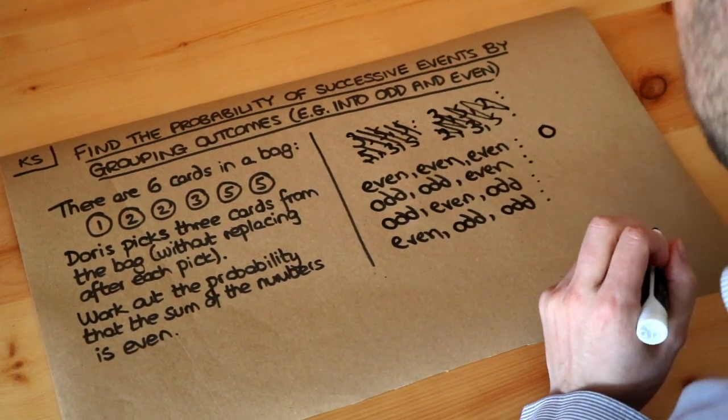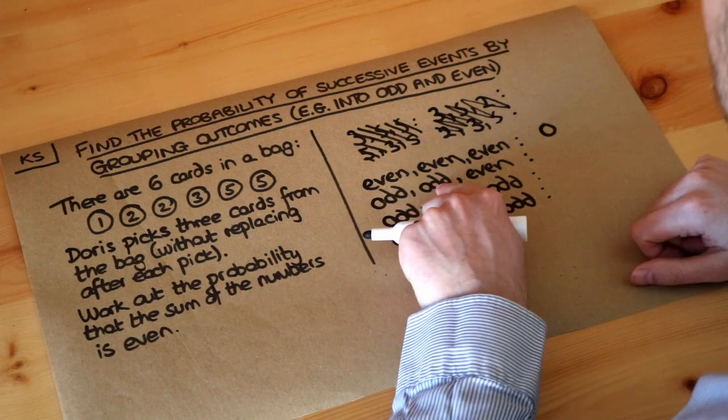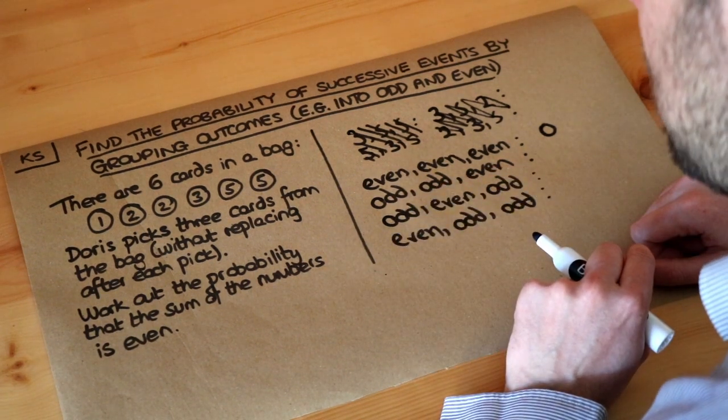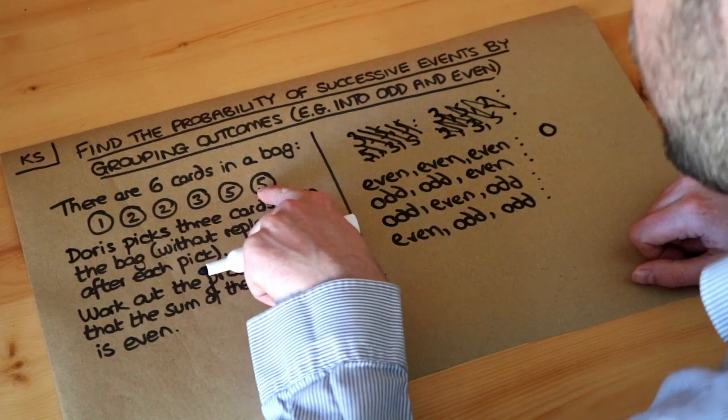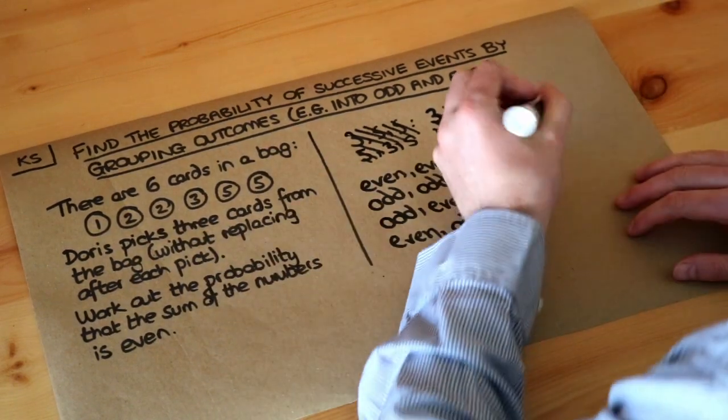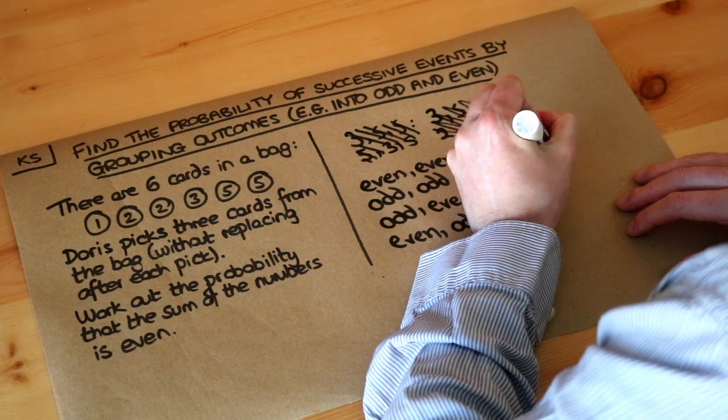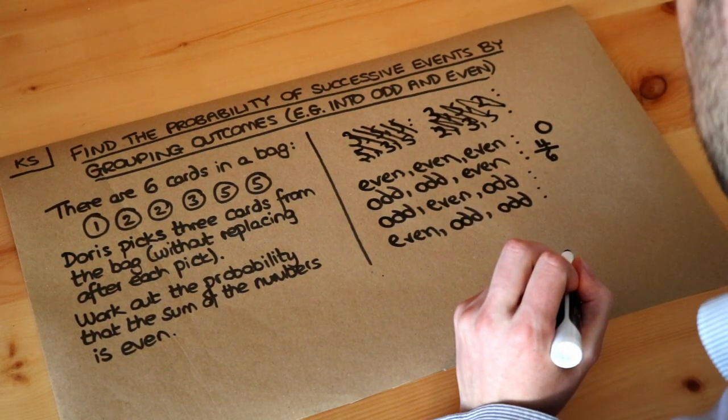So it has a probability of zero. What about the next one? Odd, then odd, then even. Well, the probability of the first card being odd is one, two, three, four. There's four odd cards out of the six, so it's four out of six. And then what's the probability that the next card is odd?